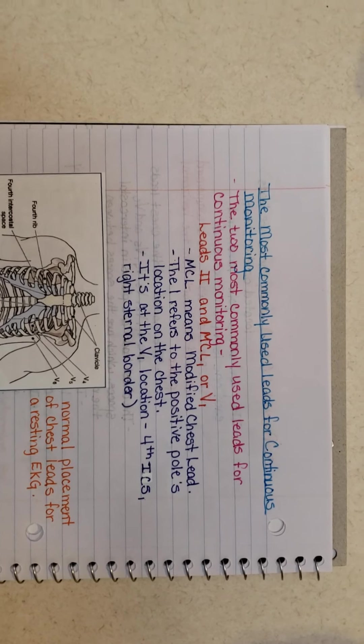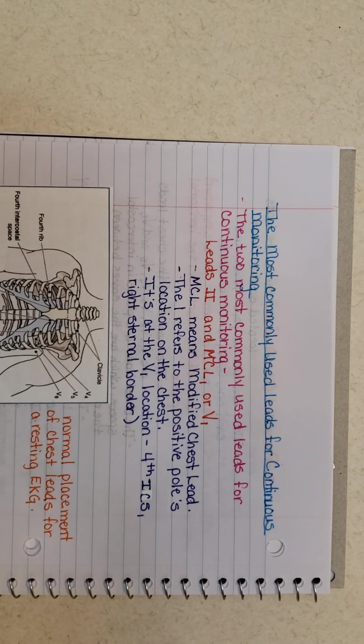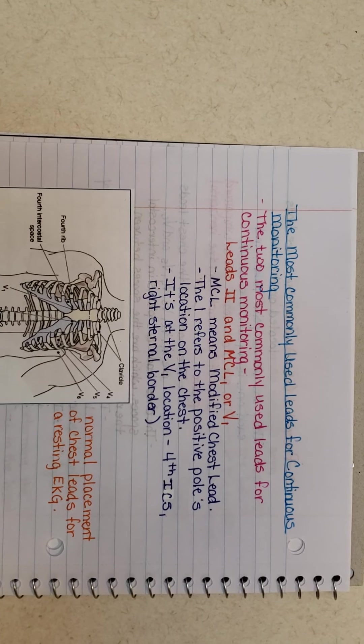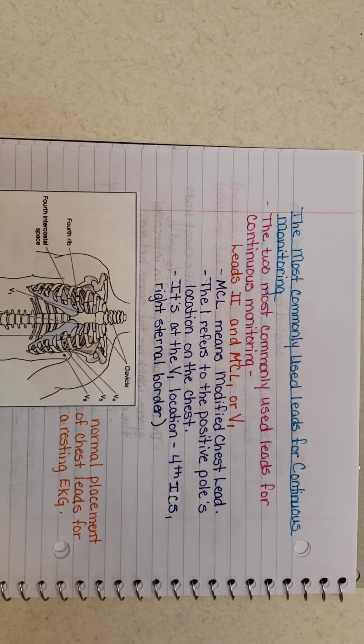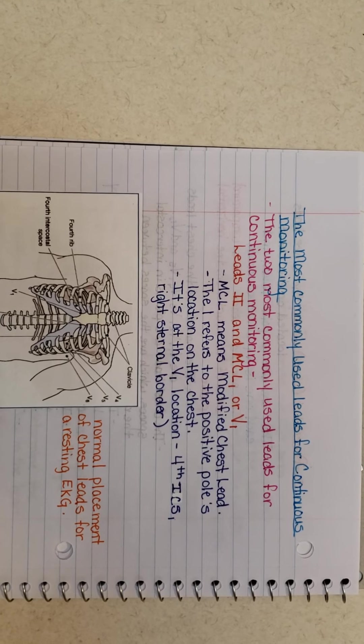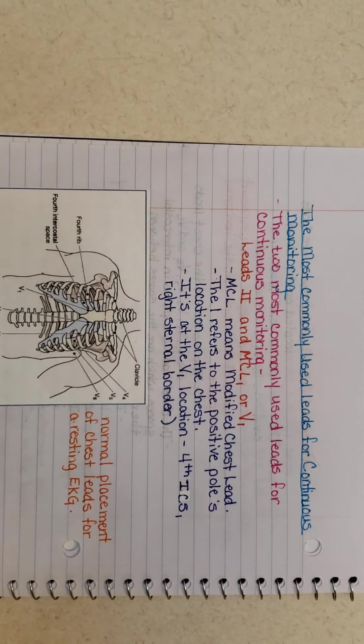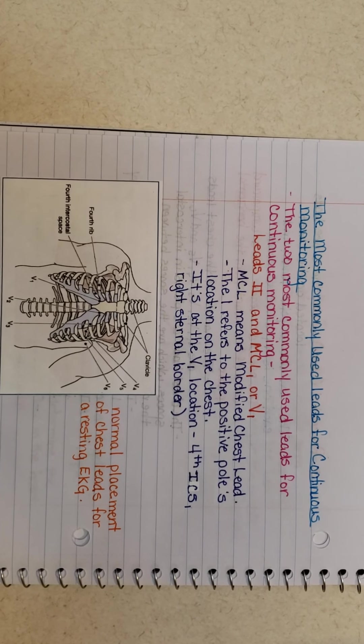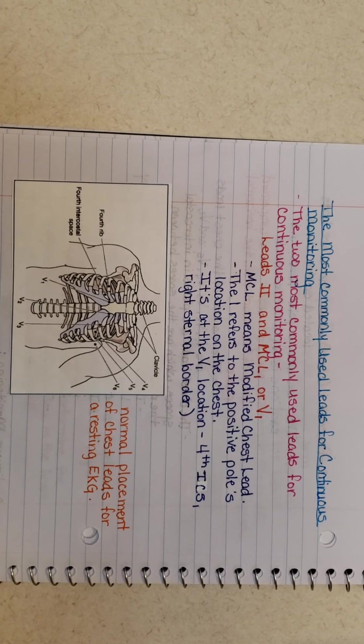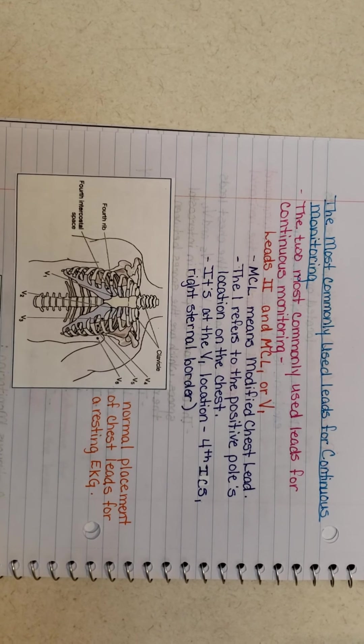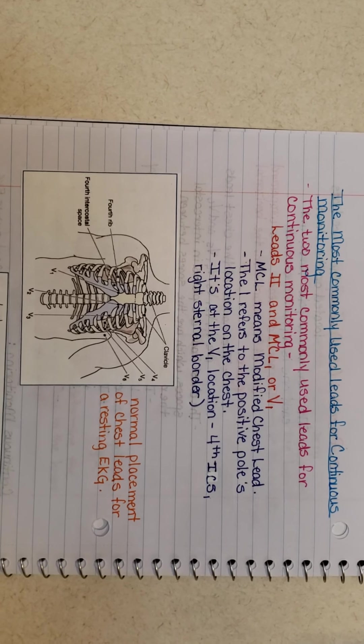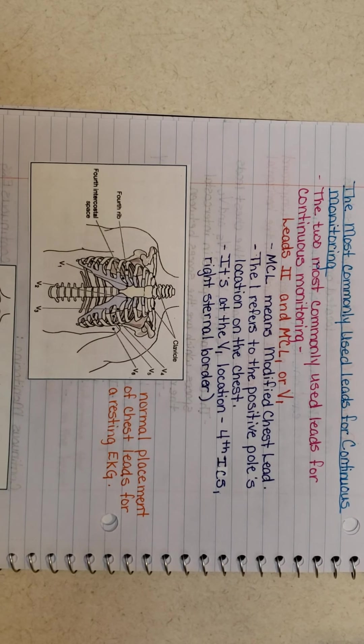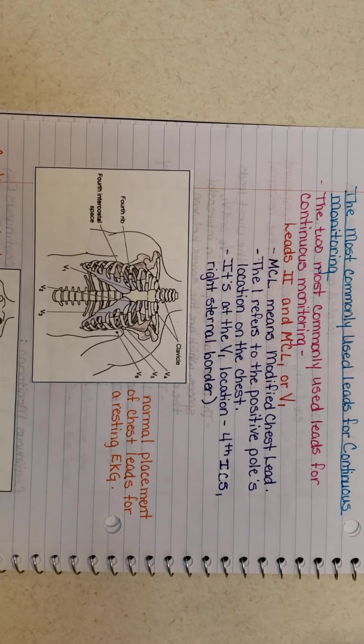The most commonly used leads for continuous monitoring, there are two. You can either use V leads and MCL or V1. MCL basically means modified chest lead. The one refers to the positive pole located on the chest at the V1 location, which is located at the fourth intercostal space right sternal border.